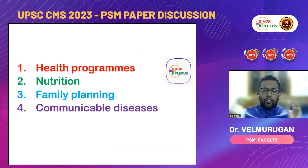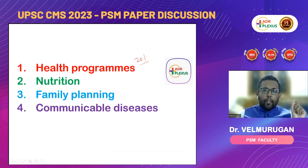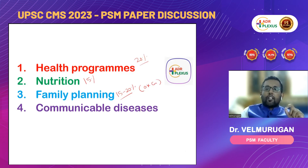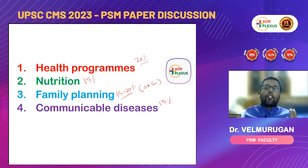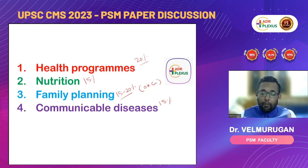Looking at the topic breakdown: health programs constitute around 20% of the questions. Then nutrition, around 15% of the questions. Then family planning, around 15 to 20%, mostly linked with OG — obstetrics and gynecology. Communicable diseases constitute around 15%. The rest were contributed by occupational health, two to three questions from basic epidemiology and infectious disease epidemiology. Mainly we had to focus on health programs, then nutrition — this time it was focused more — and as usual family planning.